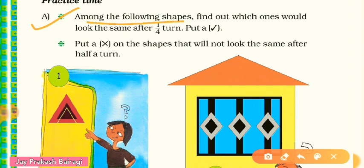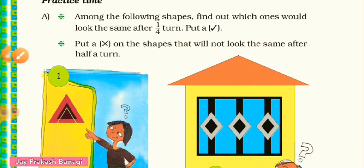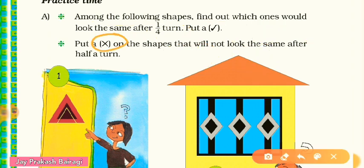Next we have practice time. Question A: among the following shapes, find out which ones would look the same after one fourth turn. Use a tick for shapes that look the same after one fourth turn, and a cross for shapes that do not look the same after half turn.